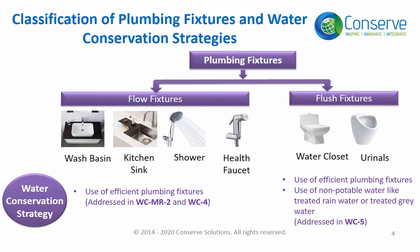Plumbing fixtures can be classified into flow fixtures and flush fixtures. Flow fixtures include wash basins, kitchen sinks, showers, and health faucets. Flush fixtures include urinals and WCs, that is water closets.